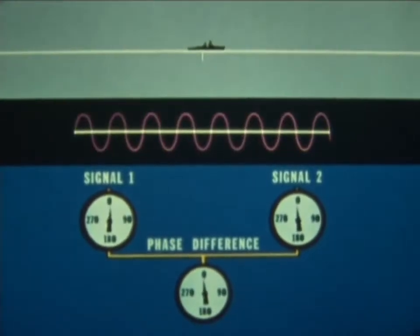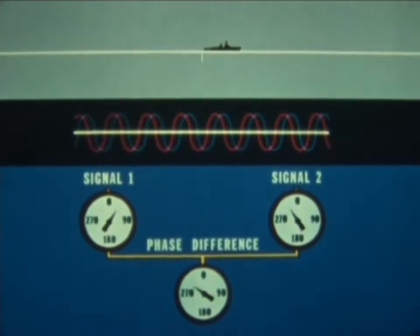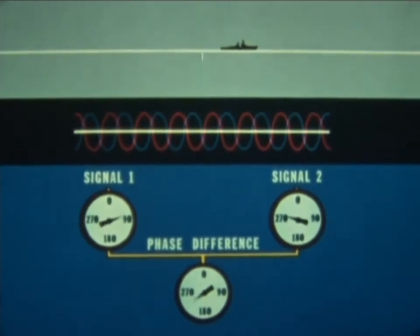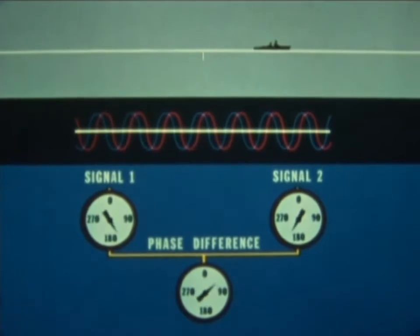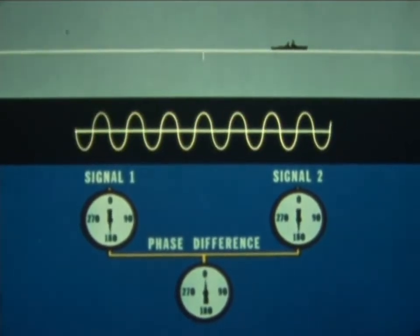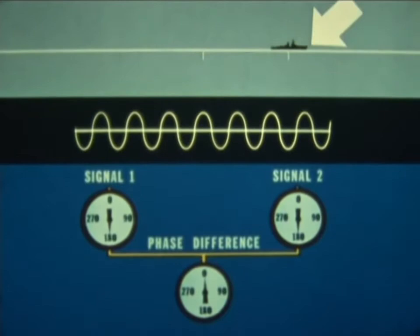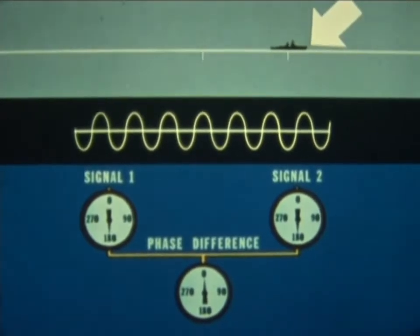As the receiver moves away from the midway line of position, also called a zero phase contour line, the phase difference gradually increases from zero through 360 degrees, or back to zero, thus locating another zero phase contour line.